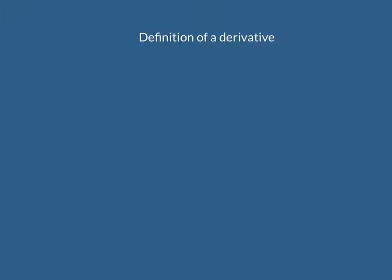This video is going to introduce one of the most important concepts in calculus — the definition of a derivative. The derivative of a function is the slope of a tangent line at any specific x value. In other words, the derivative is the rate of change of a function at a specific x value, which is the instantaneous rate of change. So a derivative is the slope of the tangent line at an x value.